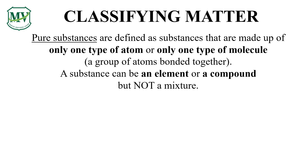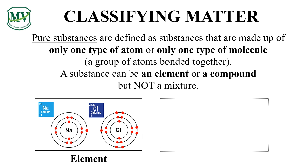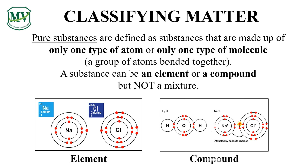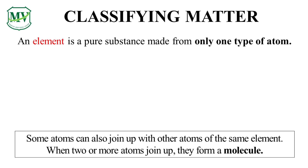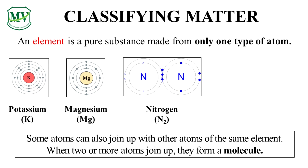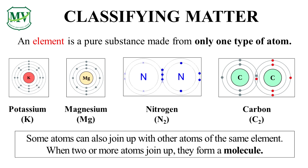Pure substance is made up of only one type of atom or one type of molecule. A substance can either be an element or compound. Table salt, which has the chemical formula NaCl, is a compound. It is made up of the elements sodium (Na) and chloride (Cl). Potassium, magnesium, nitrogen, and carbon are examples of elements, because they only contain one type of atom each.